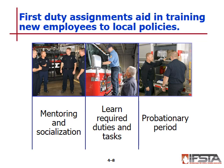Probationary periods vary from department to department — anywhere from three months to 18 months. A lot depends on whether they go to firefighter recruit school for 12-14 weeks and then EMT school for another 12-18 weeks. When you factor that in, you could be losing six months to a year before these people even set foot in a fire station. That's why many departments have longer probationary periods.